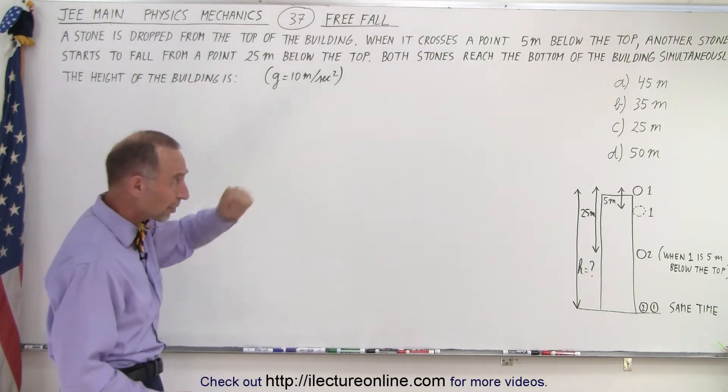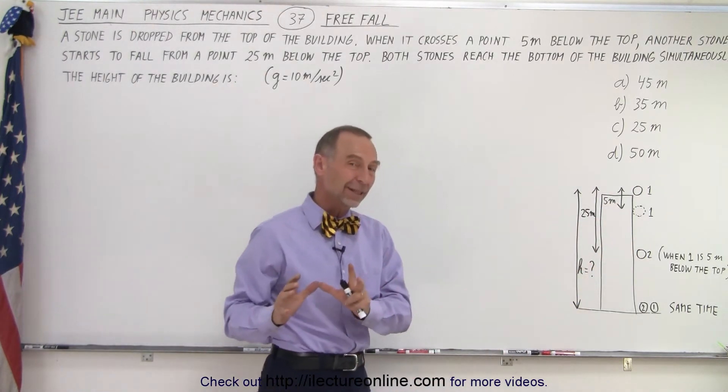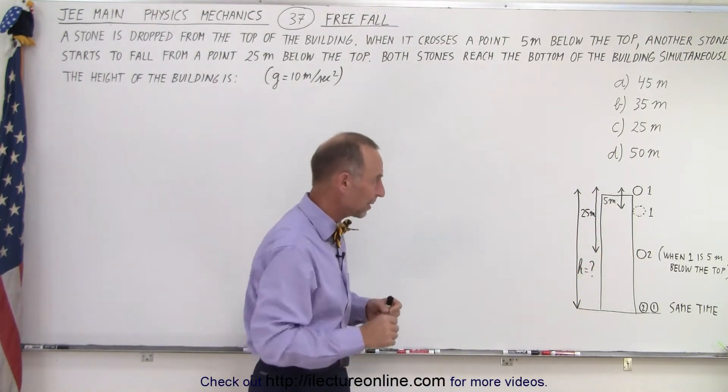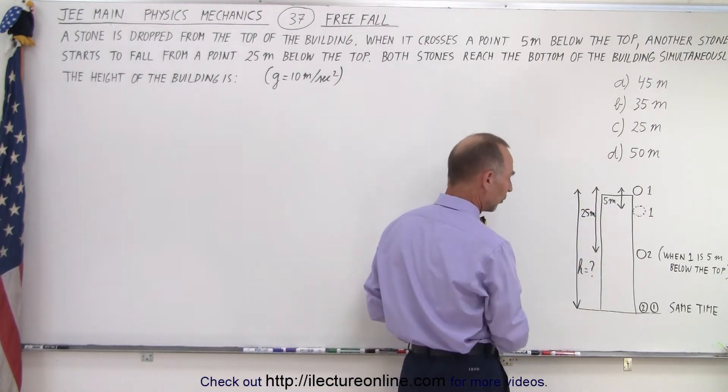They give us four possible answers, and they did not give us a diagram. So I put a diagram on there so it would be a little bit easier to visualize what's happening. So we have the height of a building. We don't know what height is. That's what we're looking for.